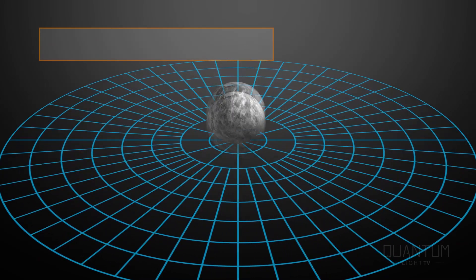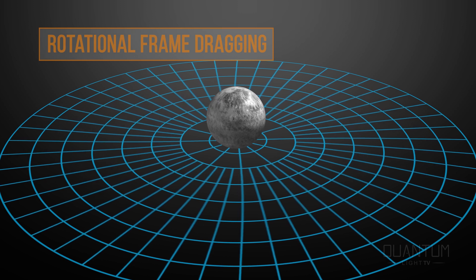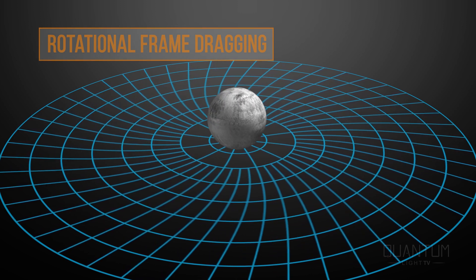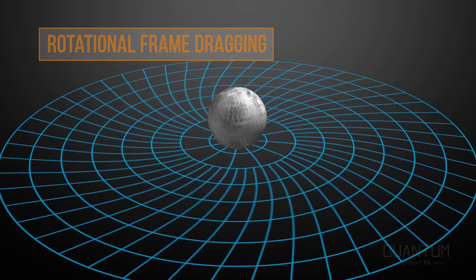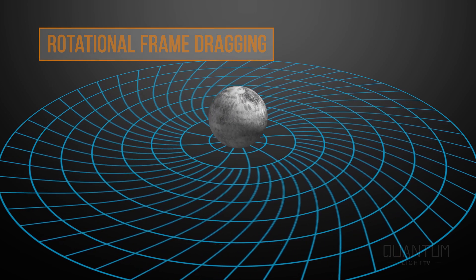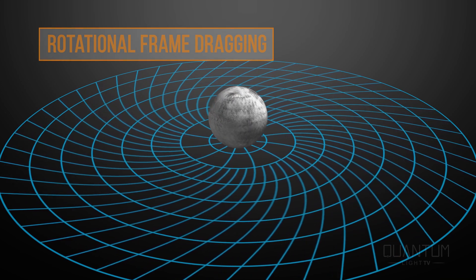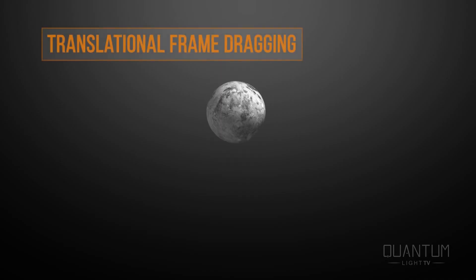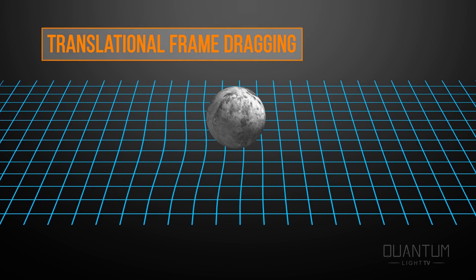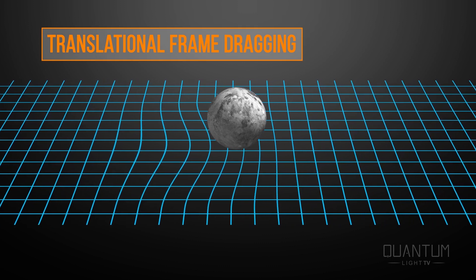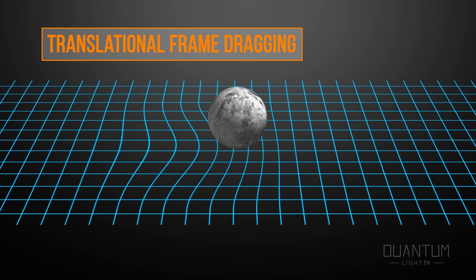There are two types of frame dragging I want to introduce. The first is rotational frame dragging, caused by a rotating body. The second is translational frame dragging, caused by a body moving through space. So what causes frame dragging?